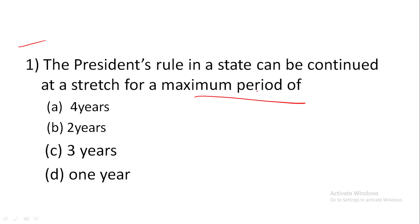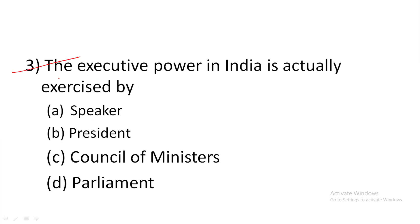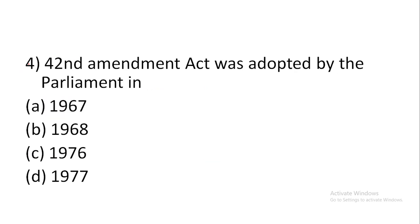Question 2: The Council of States in India has how many elected members? Answer is 238. Question 3: The executive power in India is actually exercised by — answer is C, Council of Ministers.